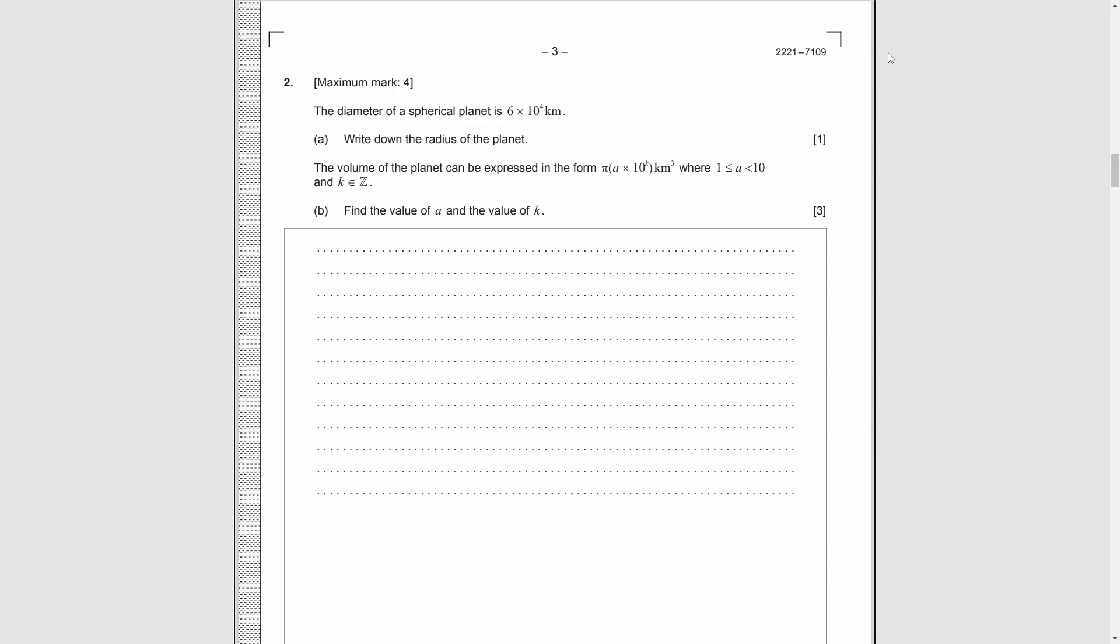Second question, part A. The diameter of sphere is this. And we need to find the radius. Easy. Just divide it by 2. Part B. It gives us the volume and asks us for a and k. So we need to set up an equation and then solve it.